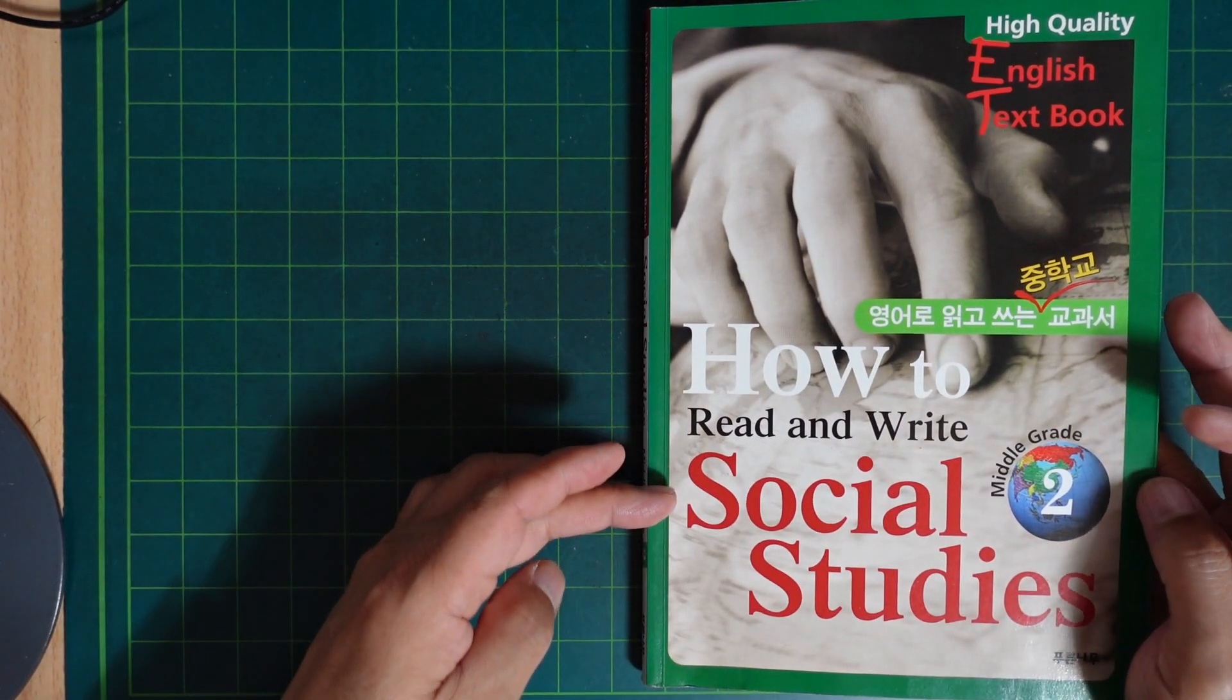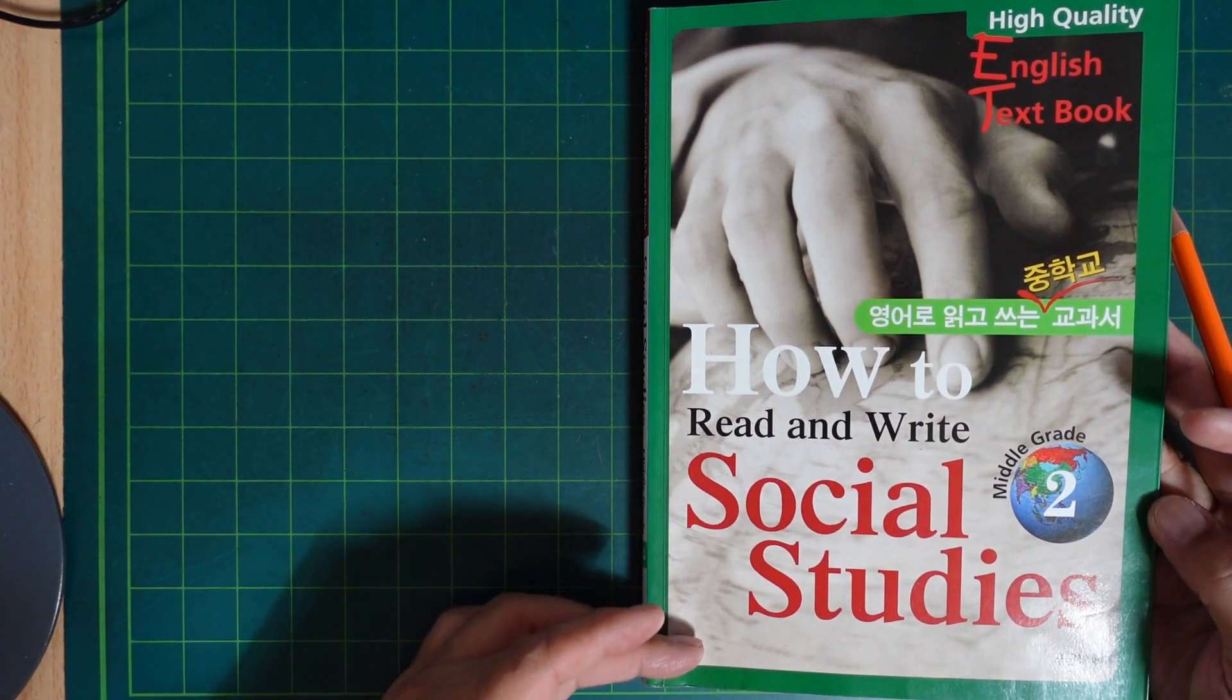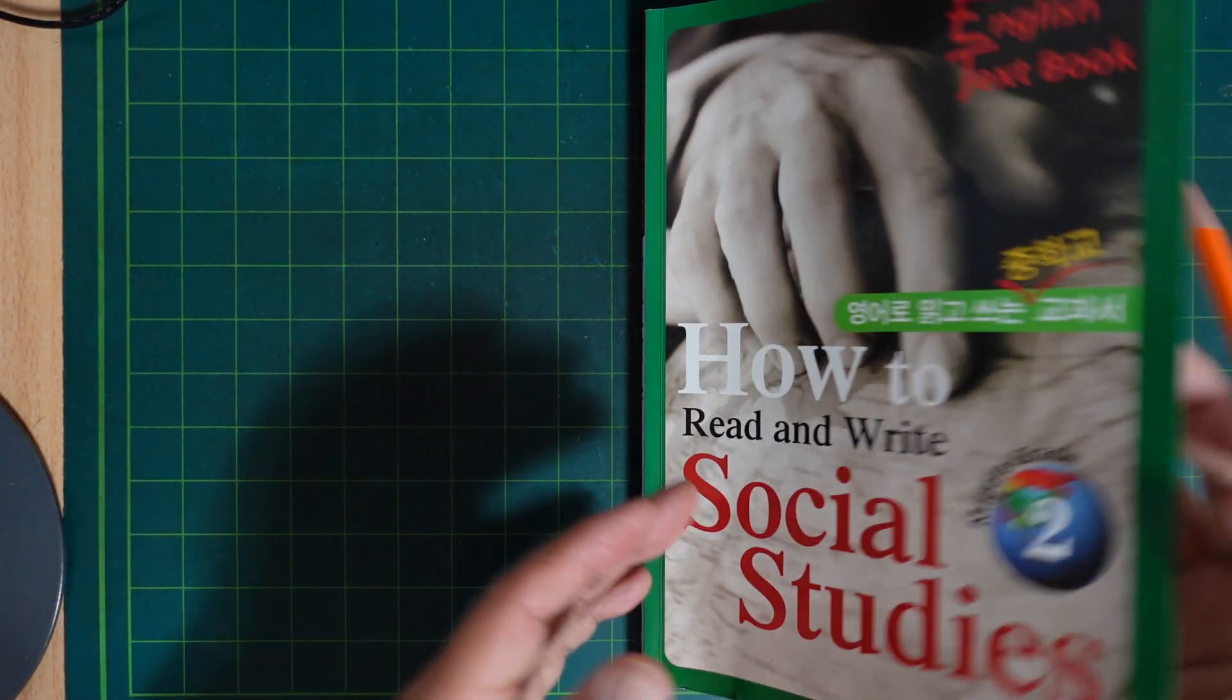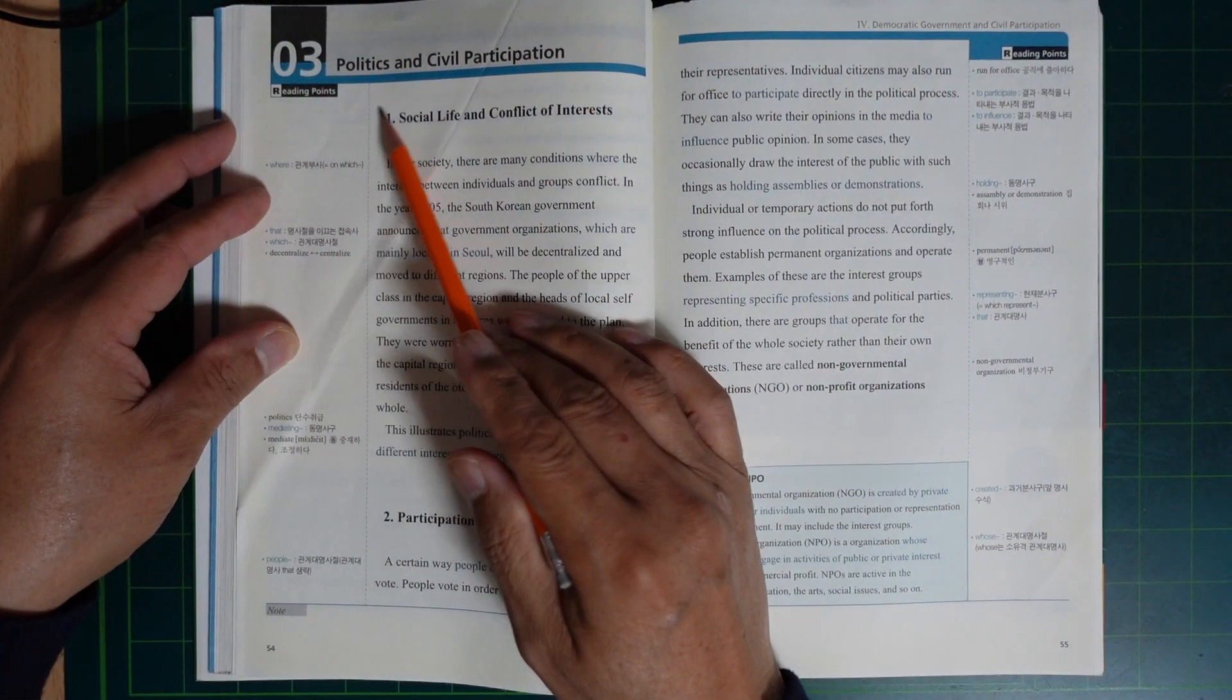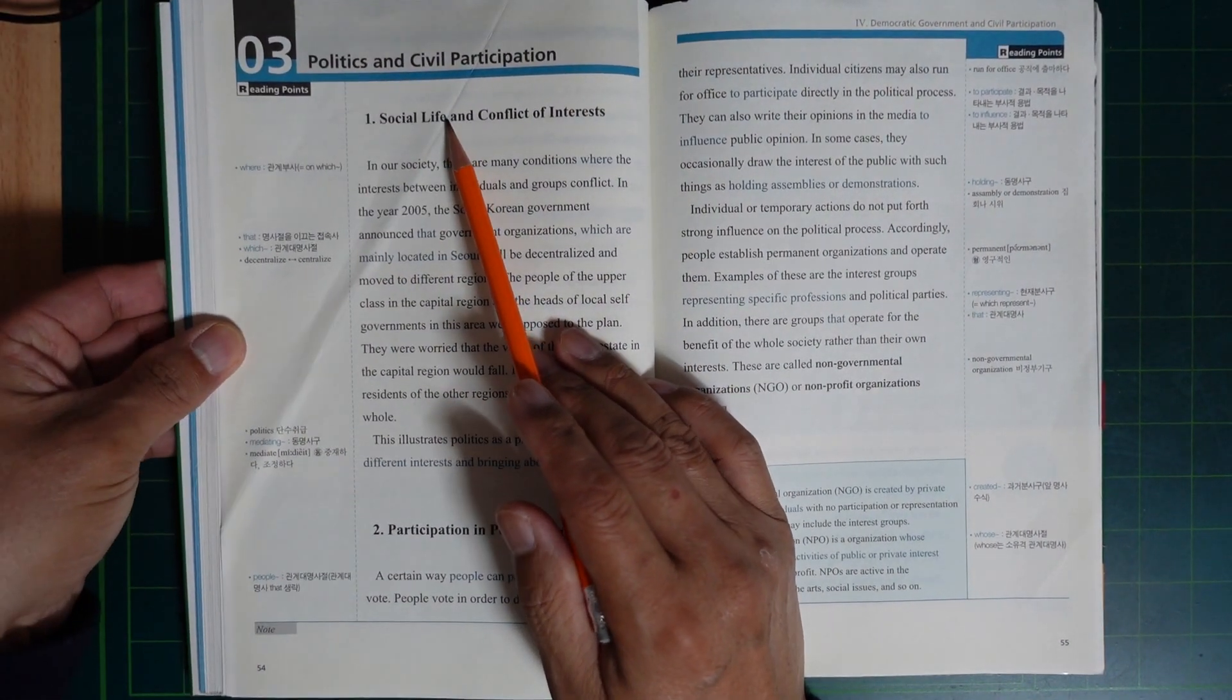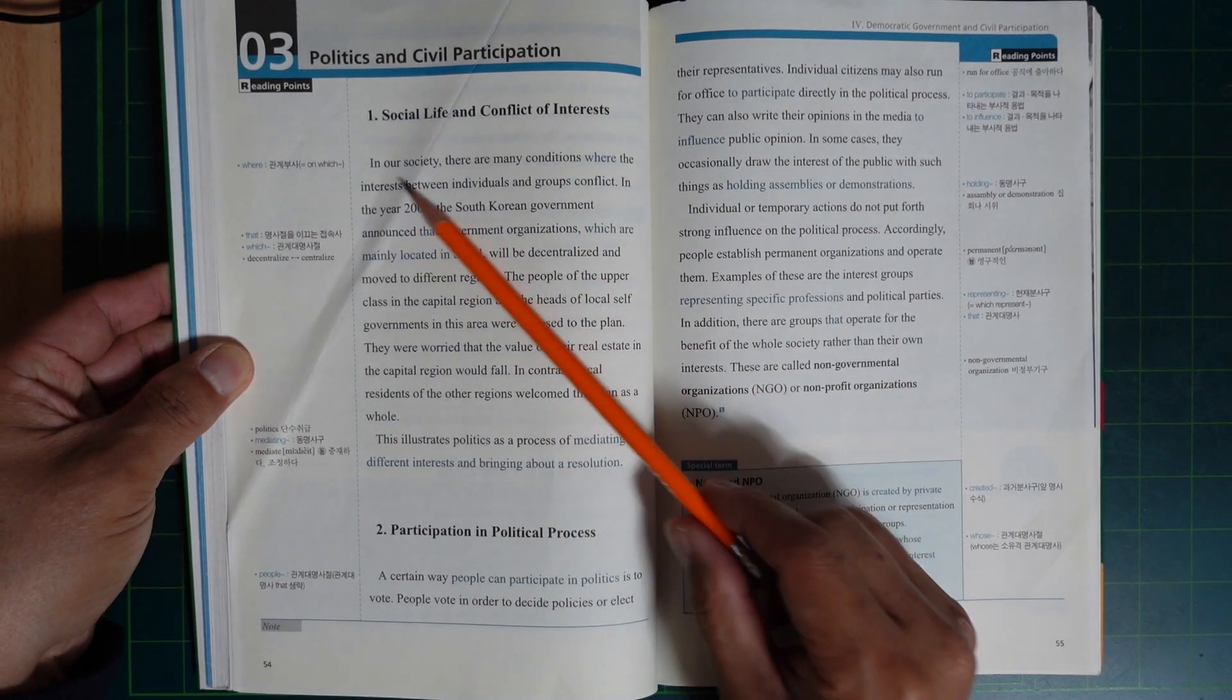How to read and write Social Studies, Social Studies middle grade 2-3. Political and Civil Participation 1.